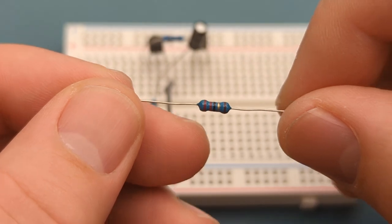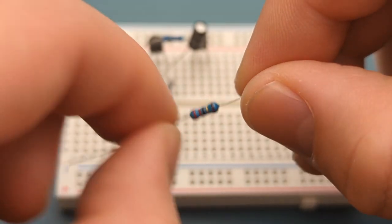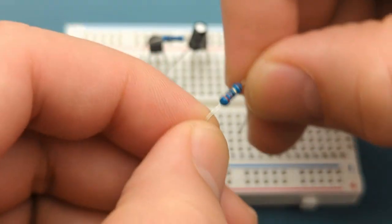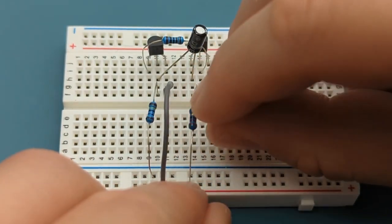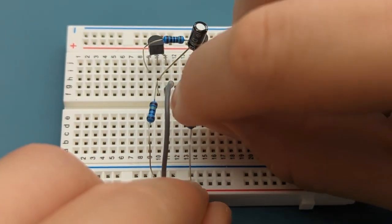Bend the ends of a 22 ohm resistor. Insert the 22 ohm resistor into the collector of the BC547 and the positive rail.